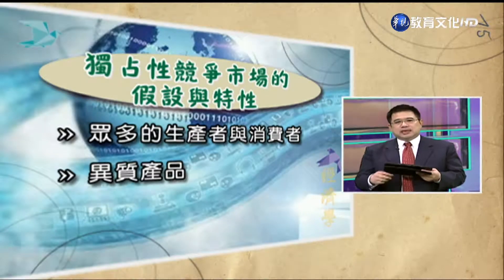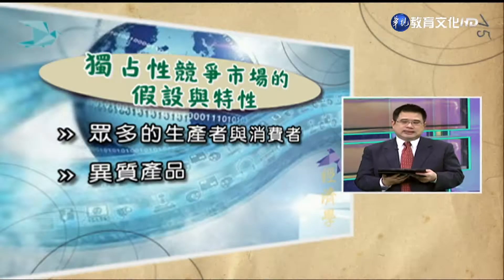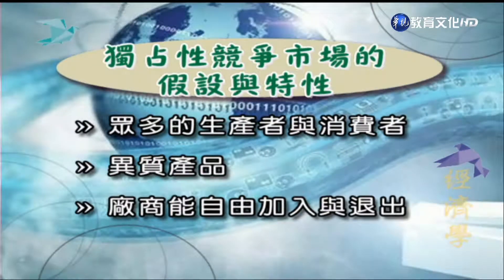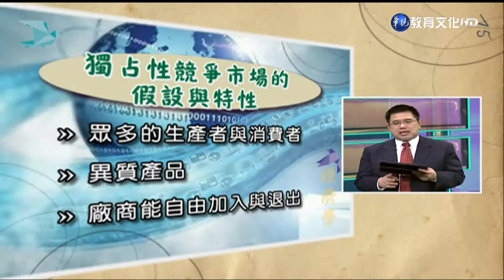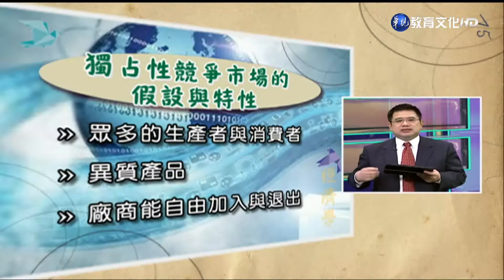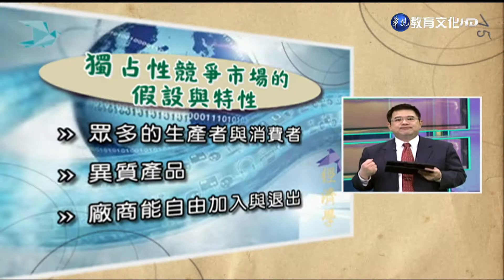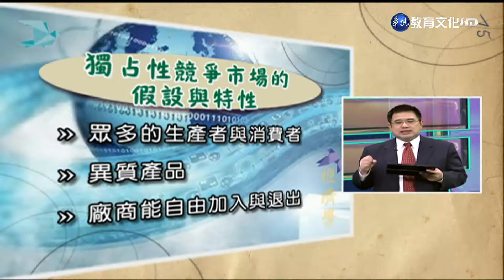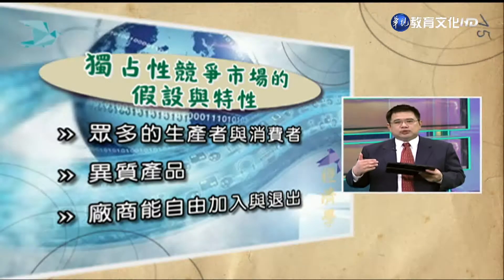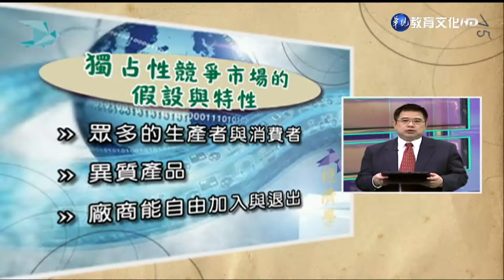差异化产品的意思是生产的人很多，可是生产的产品有那么一点点差异，不是完全一样的。第三个最重要的假设是，在长期下独占性竞争市场里面的厂商可以自由地进出市场。如果短期下市场里面的厂商有超额利润，其他厂商就会加进来瓜分市场；如果有亏损，这些厂商就会退出市场，使留在市场里的厂商需求增加，售价提高。